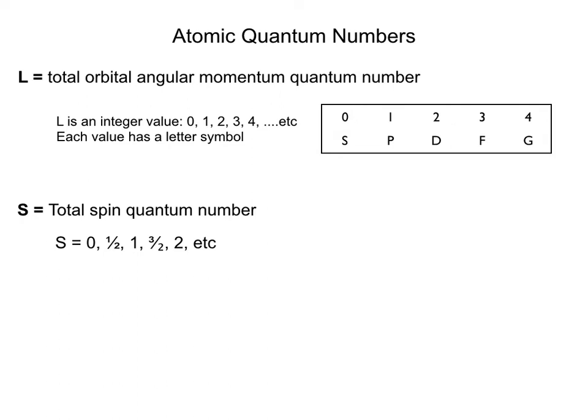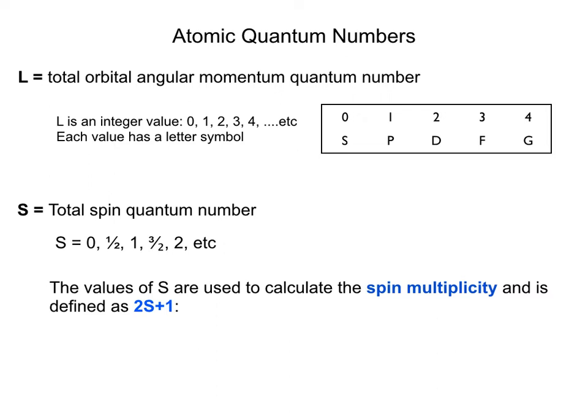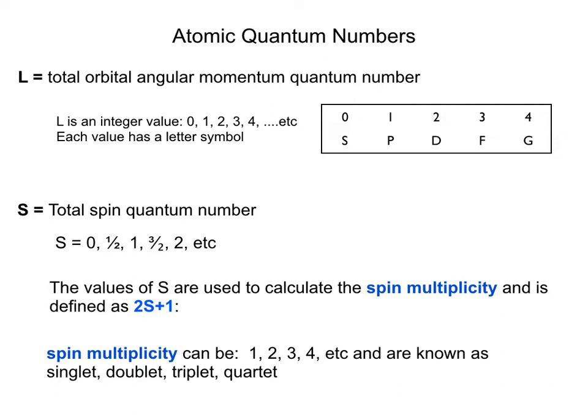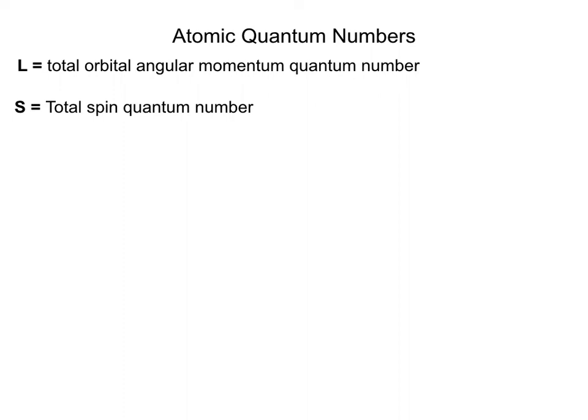From the spin quantum number we get the spin multiplicity, which equals 2S + 1. The spin multiplicity can be 1, 2, 3, 4… referred to as singlet, doublet, triplet, quartet. This tells us about how many unpaired electrons are in a particular spin state — a singlet state has multiplicity 1, a doublet has multiplicity 2, and so on.